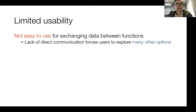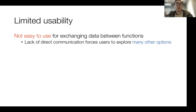The second limitation is usability. Current serverless platforms are not easy to use for exchanging data between functions. Serverless functions typically have no direct communications. This forces users to explore many other data exchange options — for example, via an orchestration service, or invoking one function from another, or relying on external storage like S3 and Redis.